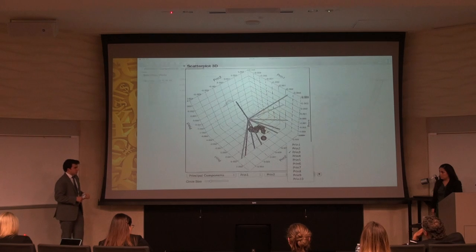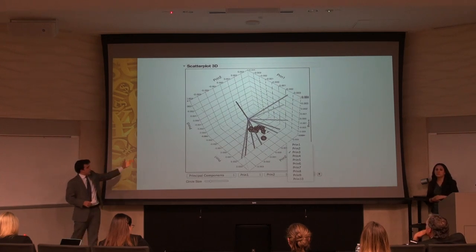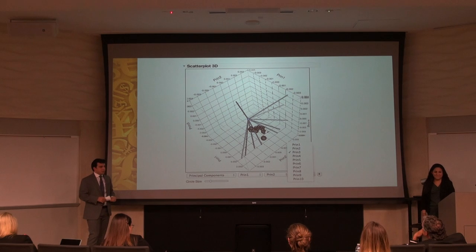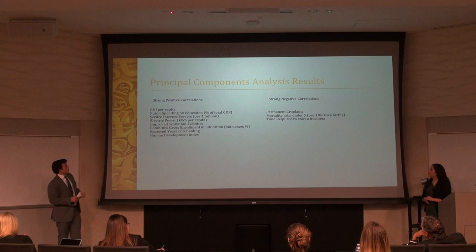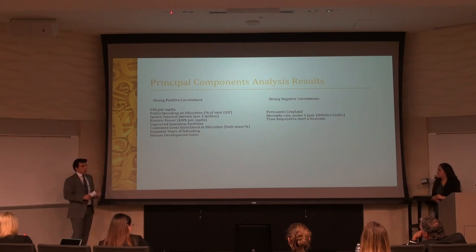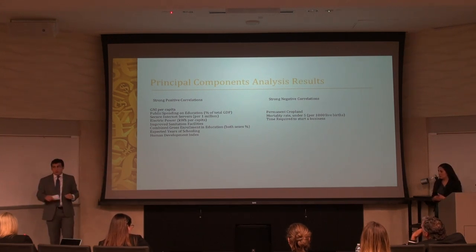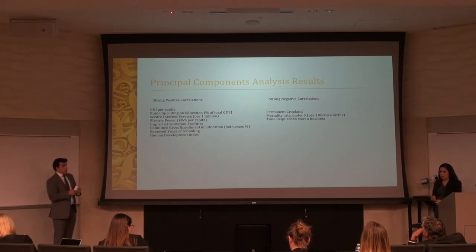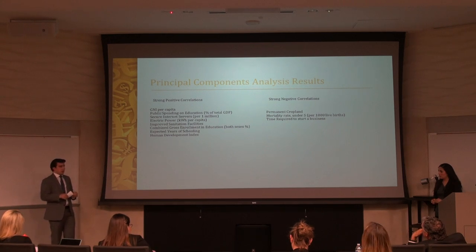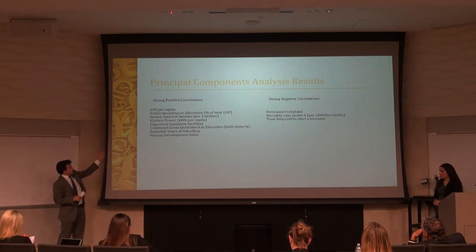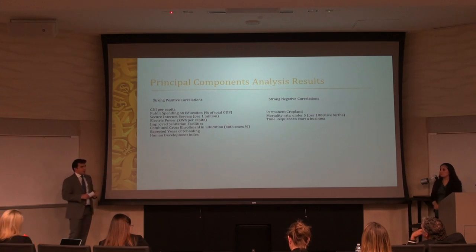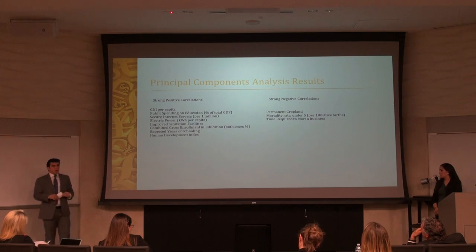Here is a 3D graph of the principal components. The strong positive correlations we found — consistent from 2006 to 2013 with little variance — included GNI per capita, public spending on education, sanitation, human development index, technology access, electricity usage, and secure internet. These were the strongest positive correlations to GDP.